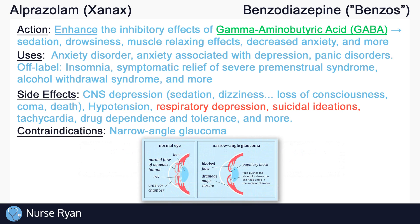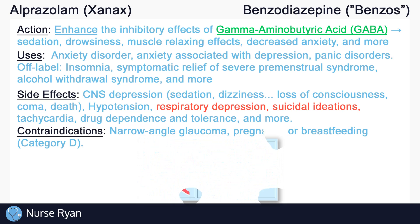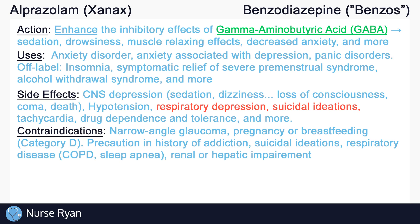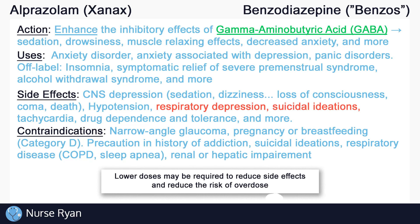Avoid use in patients with narrow-angle glaucoma, as alprazolam may increase intraocular pressure in rare cases. Alprazolam should not be given to patients during pregnancy or patients who are breastfeeding, as it belongs to FDA pregnancy category D. Precaution should be used in patients with a history of addiction and patients with suicidal ideations. Also, exercise caution in patients with respiratory disease, like COPD or sleep apnea, due to the risk of respiratory depression. Exercise caution in patients with renal and hepatic impairment, and in elderly patients, as doses may have to be lowered.